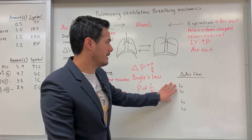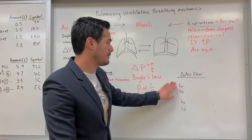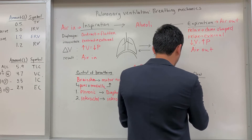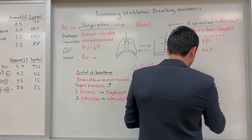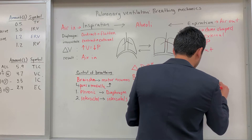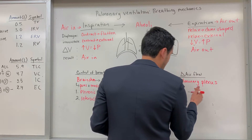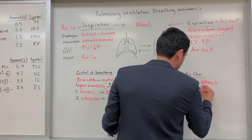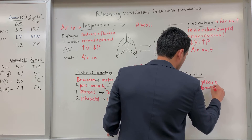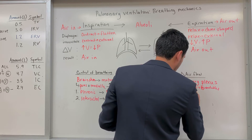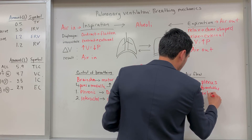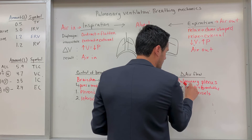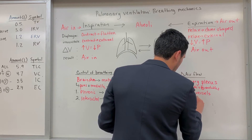To control the amount of air flowing into the different bronchi and bronchioles we have what's known as the pulmonary plexus. The pulmonary plexus affects the bronchi, bronchioles, and also some of the blood vessels. We can change the diameter of the bronchi and bronchioles because the pulmonary plexus is regulated by the autonomic nervous system.